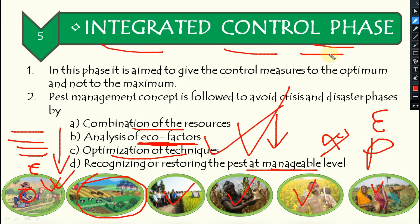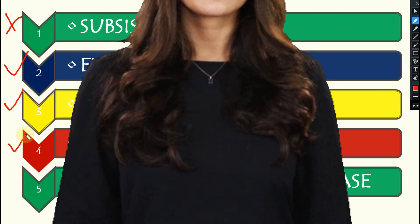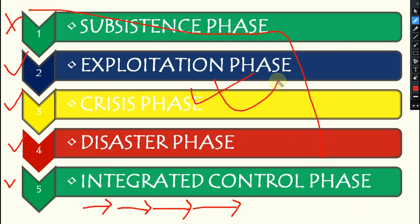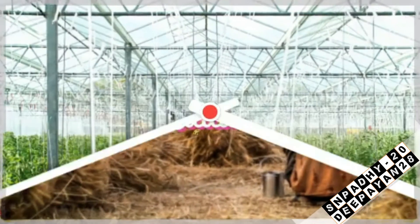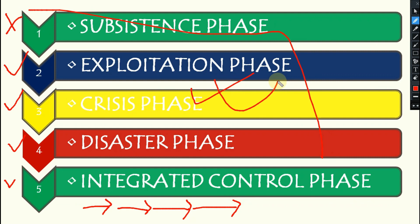In summary: during the subsistence phase, no insecticides were used; during the exploitation phase, insecticide use began; during the crisis phase, negative impacts started; during the disaster phase, the whole system collapsed; and during the integrated control phase, eco-friendly sustainable agricultural practices were restored. These are the phases of crop protection as given by RF Smith. Try to understand these concepts, and if you have any doubts, ask in the comment box.